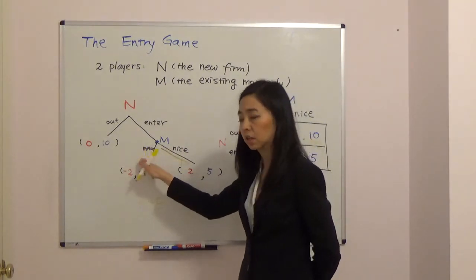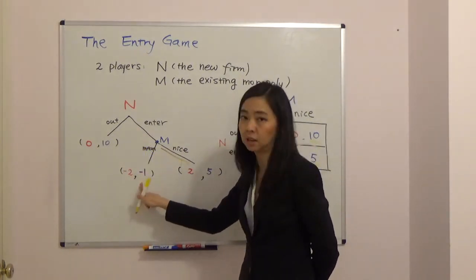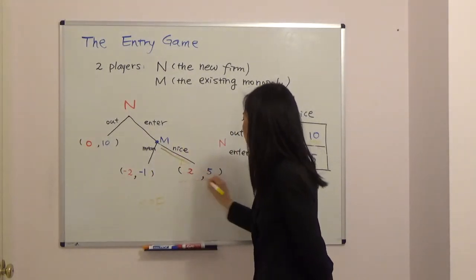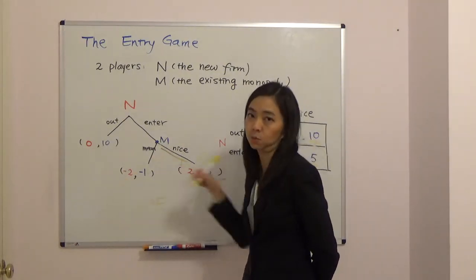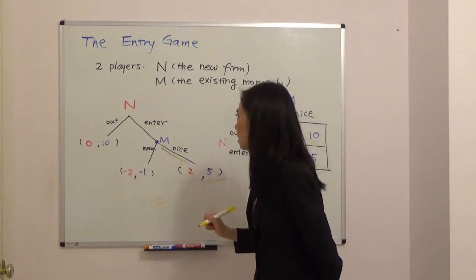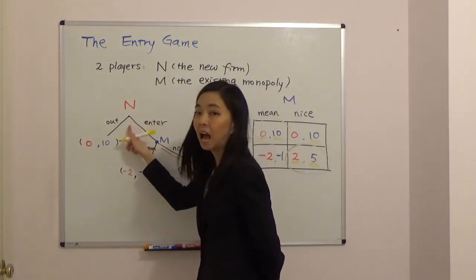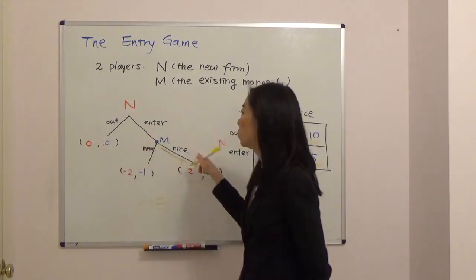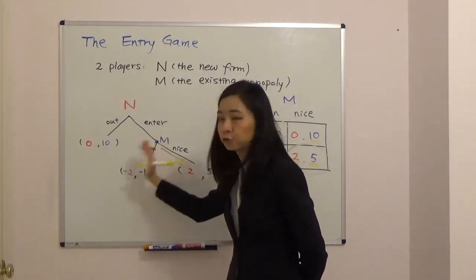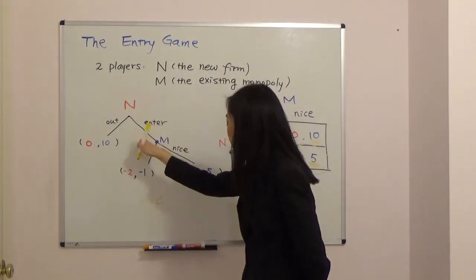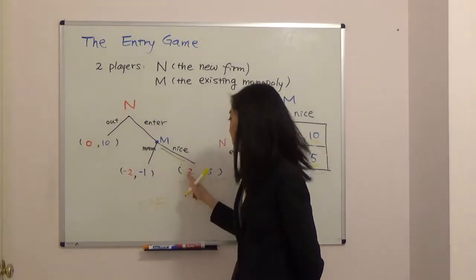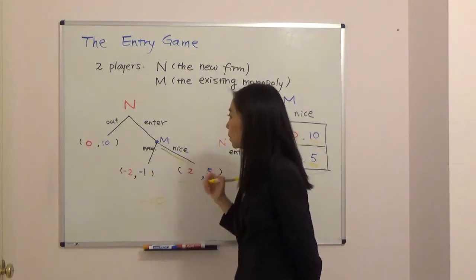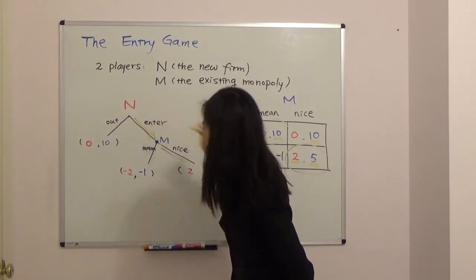The new firm knows that if it enters, that's where the game goes — and the monopoly is not going to shoot its own foot by playing mean. So given that the monopoly is going to play nice, the new firm doesn't need to worry about the mean threat anymore. If the new firm stays out it gets zero for sure, but if it enters it knows the monopoly will play nice, giving it two million. Two is better than zero, so the new firm prefers to enter the market.